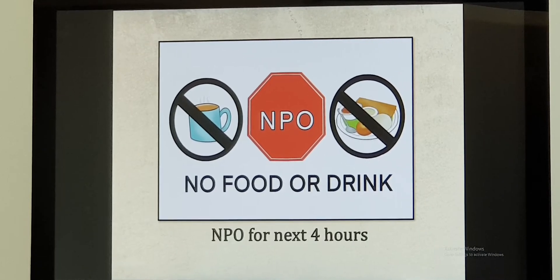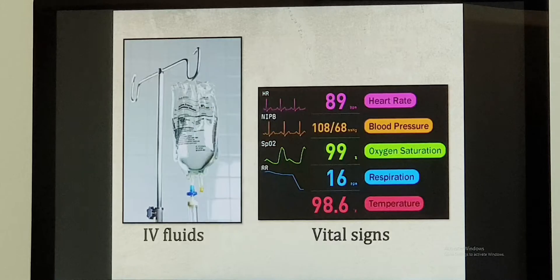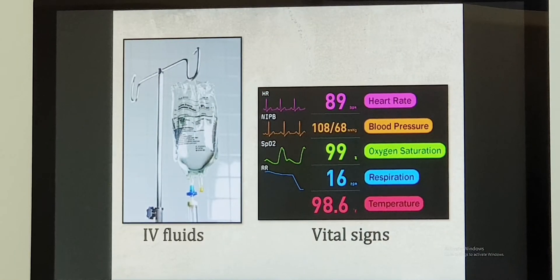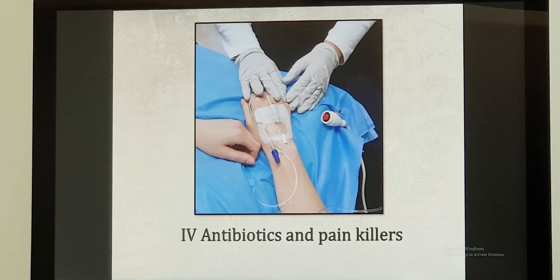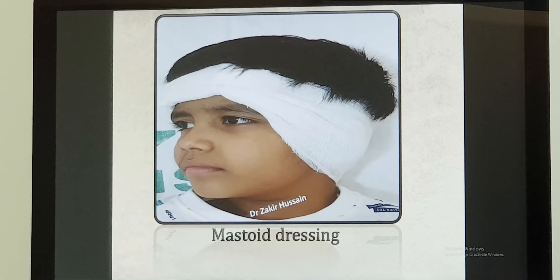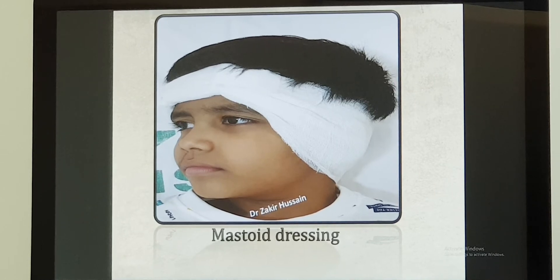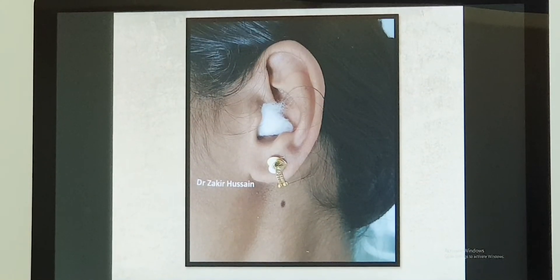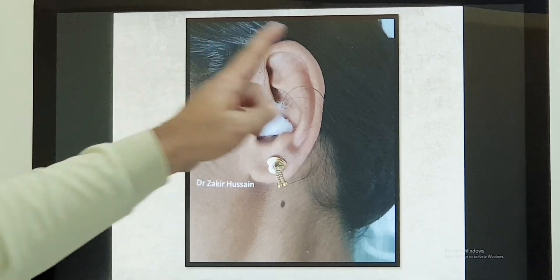After surgery, when you return to your room or ward, for the next four hours you are not to drink or eat anything. IV drip will be running and the staff nurse will check your vitals. IV fluids and painkillers will be administered. If a post-aural approach was used, there will be a mastoid bandage behind the ear. If the endoscopic approach was used, there will be a wick inside the ear with cotton and a plaster over it.